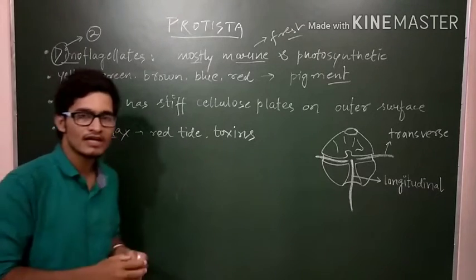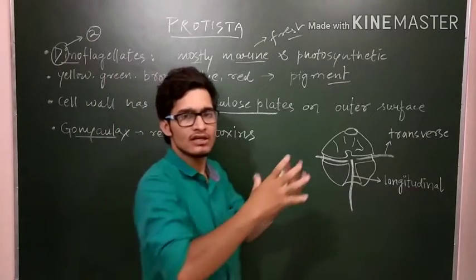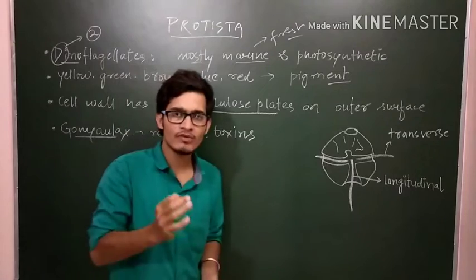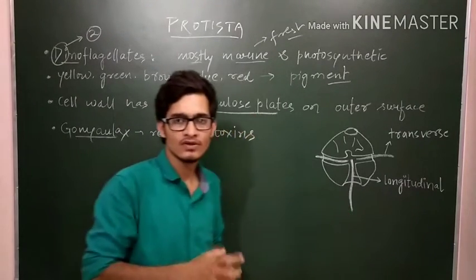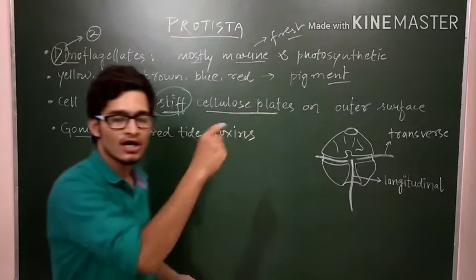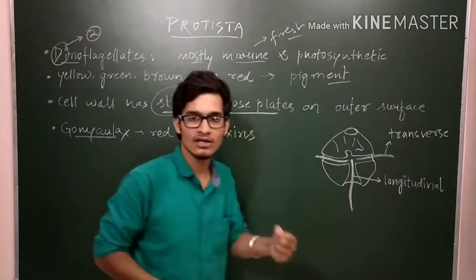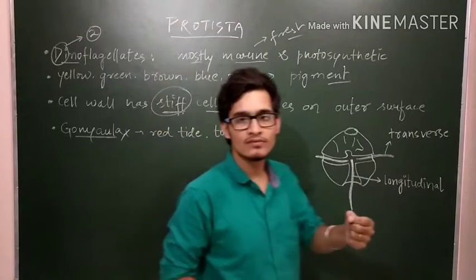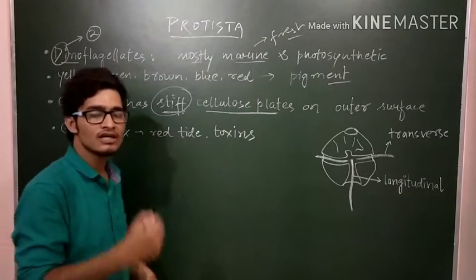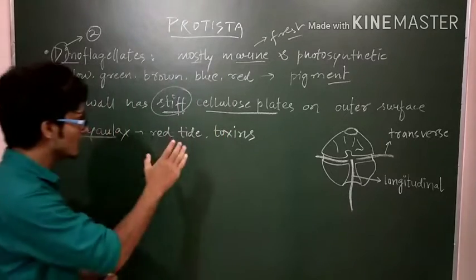After that, the cell wall of Dinoflagellates has stiff cellulosic plates. Cellulose is a kind of complex polysaccharide which is present on the cell wall. A stiff cellulosic plate is also present on the outer surface that gives it strength and makes it quite tough. It strengthens the outer surface, like a shield. Just as a warrior carries a sword in one hand and shield in the other, because attacking is not enough, defense is also important. These cellulosic plates present on the outer surface of the cell wall give it protection and make it stiffer.